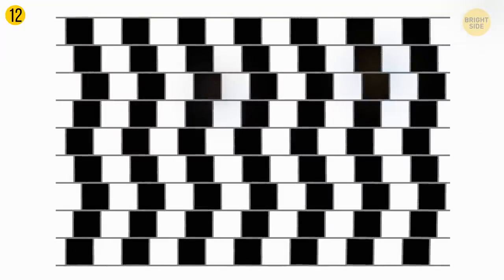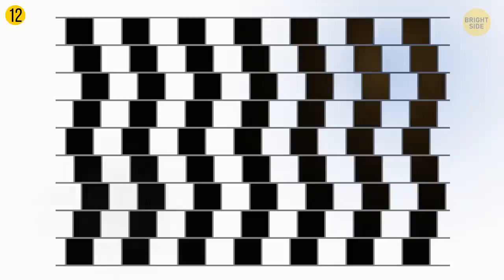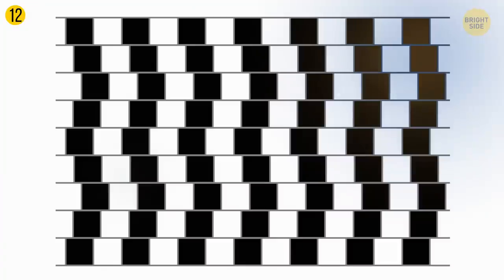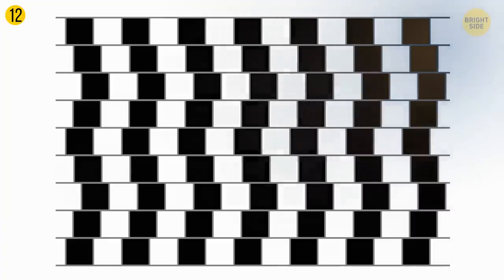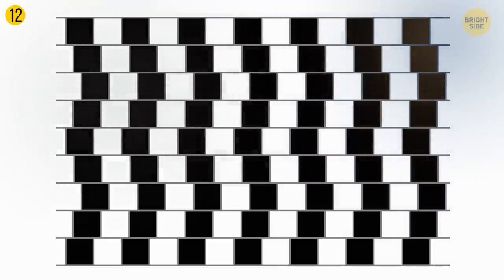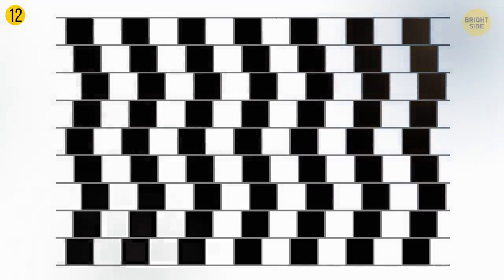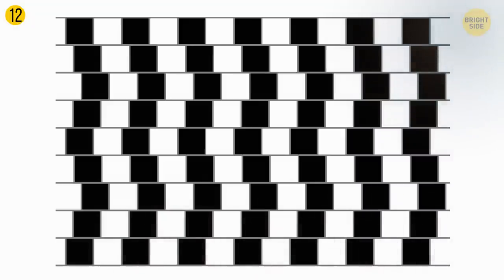When you look at this image, it may seem to you that the horizontal gray lines are slightly curved, but in reality, they're parallel. This illusion is possible thanks to the high contrast between the two different types of bricks, white and black. When your brain interprets the picture, it stretches dark zones into light ones. That's what causes the warping effect.